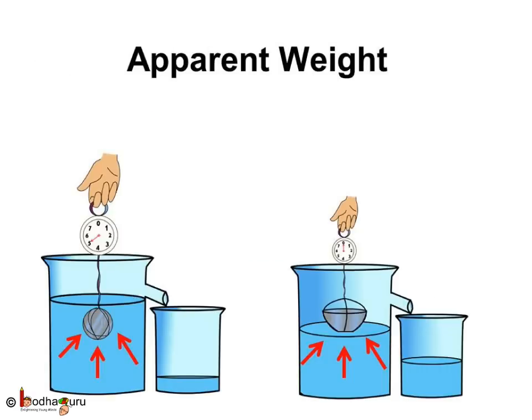Apparent weight is the change in weight of an object. It happens due to a force exerted by the surface on which the object rests, like water in this example. The object is trying to go down but the force of water is trying to keep pushing it up, so the weight of the object reduces.